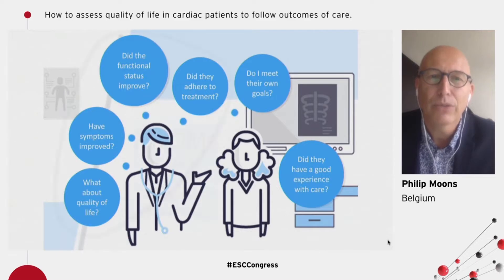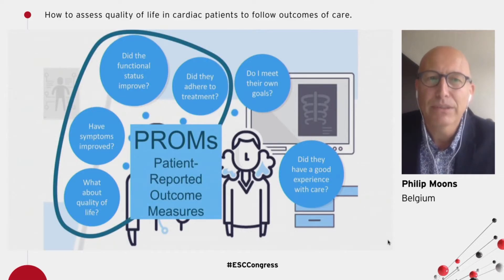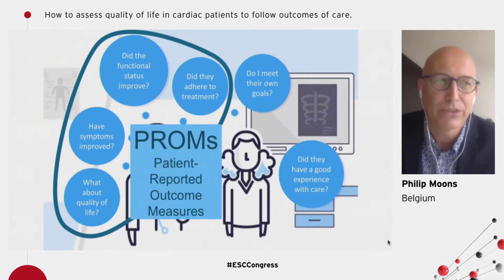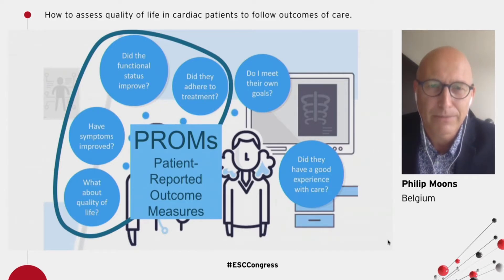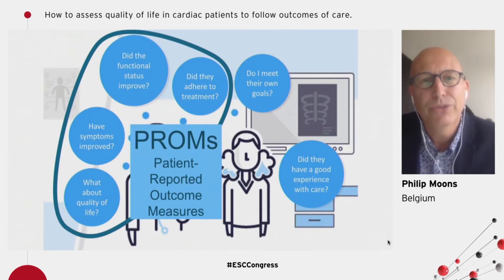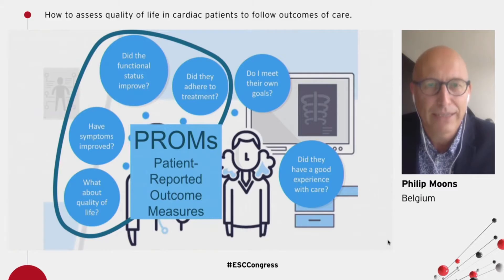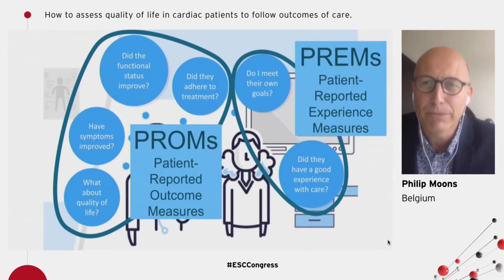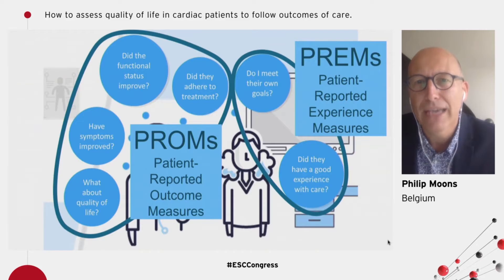Patient-reported outcomes — here you see some examples — have to do with quality of life, symptoms of the patient's functional status, and adherence to treatment, to name some examples. Patient-reported outcomes can be measured using patient-reported outcome measures, also known as PROMs. In addition to the PROMs, we also have the PREMs, the patient-reported experience measures, and this has to do with how patients experience the care that they are receiving.